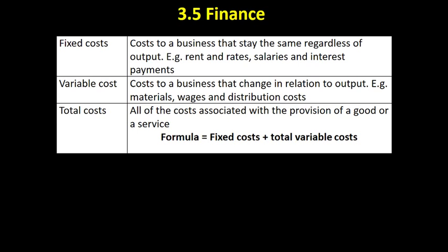There are two different types of costs that you need to be aware of. The first — and the definitions of both of these are absolutely key — fixed costs are the costs to a business that stay the same regardless of output. That little bit at the end, 'regardless of output', is the key part of this definition. If you forget to put that in, you're going to probably receive no marks.